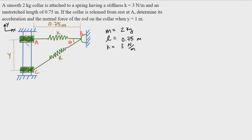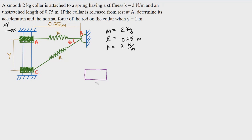The first thing we're going to do, like most dynamics problems, is draw a free body diagram of this collar. I'm going to choose an arbitrary distance so we can use all the variables. Let's imagine the collar is somewhere in the middle and draw the free body diagram there. The forces acting on this body include the weight of the collar, pointing downward because of gravity.